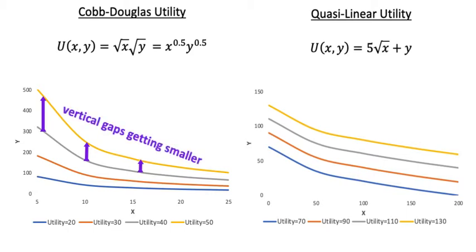That is, if you pick a random value of x, you can see that the vertical difference between the indifference curves in the quasi-linear function is constant, whereas it is not constant in the Cobb-Douglas curves.